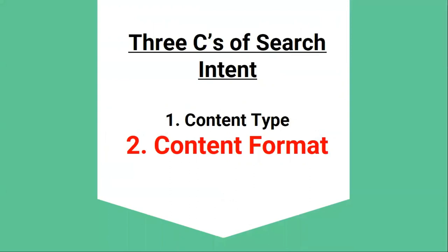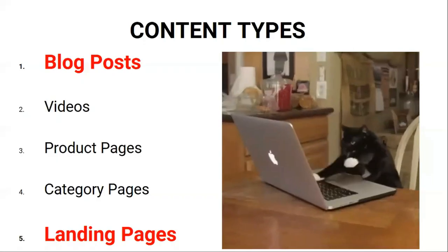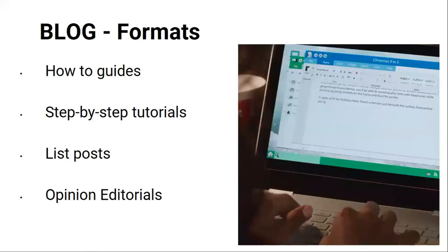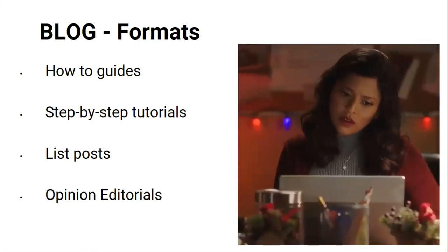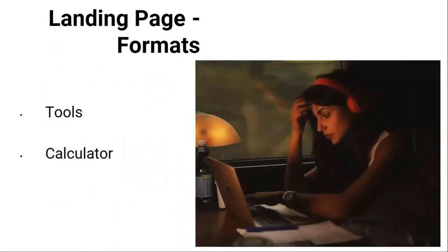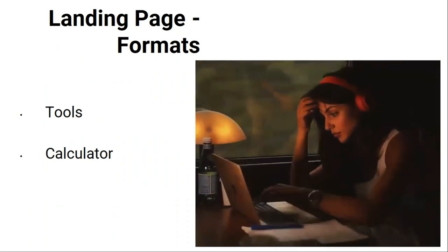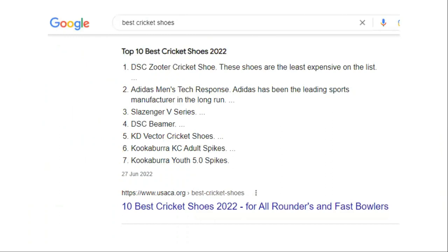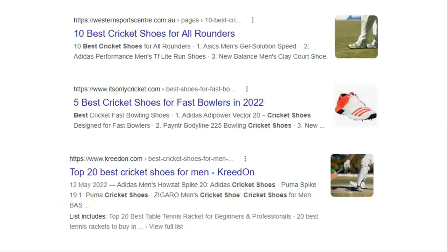The second C is content format, and this applies more to blog posts and landing pages. A few common blog formats you'll see are how-tos, step-by-step tutorials, list posts, and opinion editorials. And for a landing page, that might be something like a tool or a calculator. For the query 'best cricket shoes,' you'll see that most of the top results are listicles.